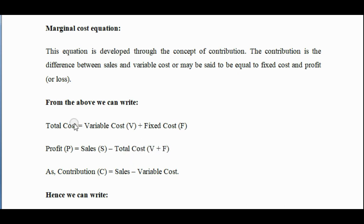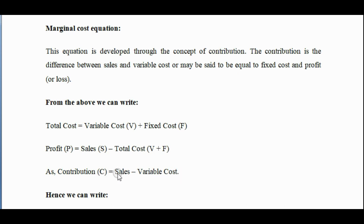Total cost is the result of adding variable cost plus fixed cost. If you add fixed cost and variable cost, you find the total cost, and you subtract this total cost from the amount of sales to get profit. Similarly, contribution is the difference between sales and variable cost. If you want to calculate the contribution, you subtract the variable cost from sales.